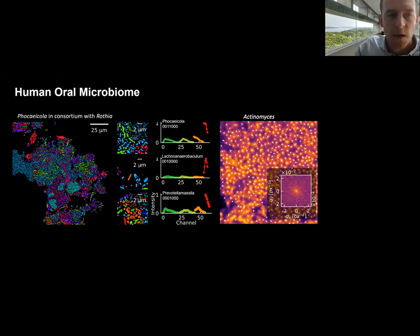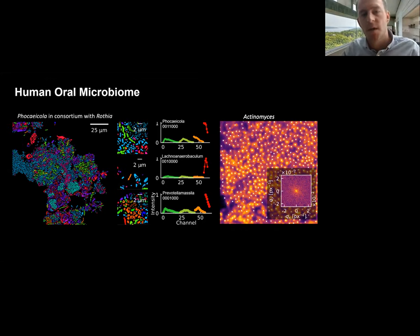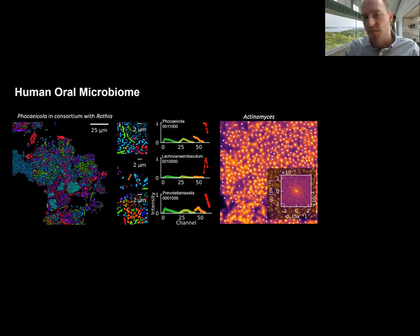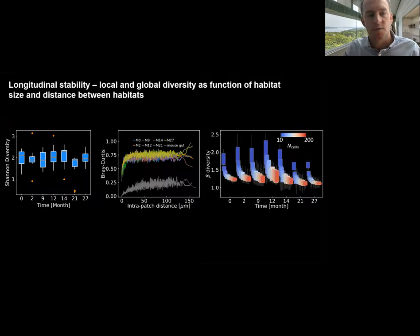We find novel things like cells of the genus Filifactor in consortium with Rothia. We also find cells like Lachnospiraceae and Prevotella that have not previously been imaged or reported in imaging studies because they have low prevalence — they're not very abundant in these microbiomes. You can look at structures of species like Actinomyces; we thought there was some regular structure, but Fourier analysis found no short or long-range order.